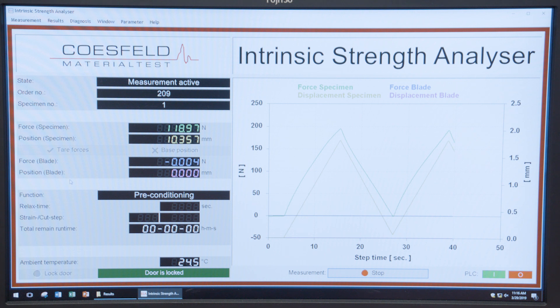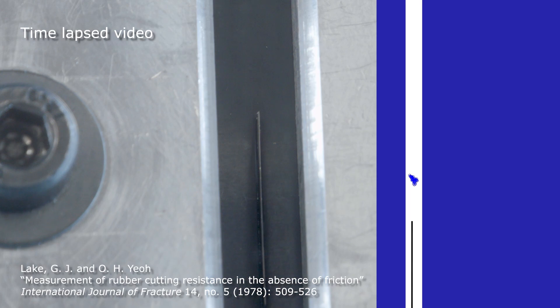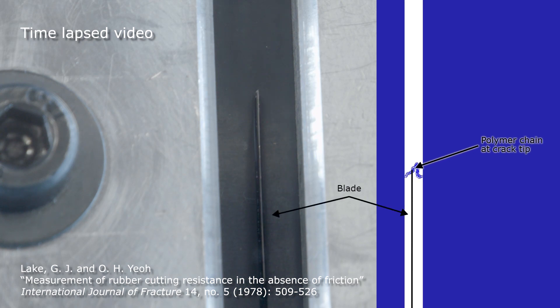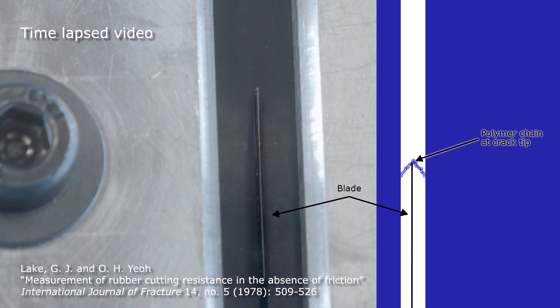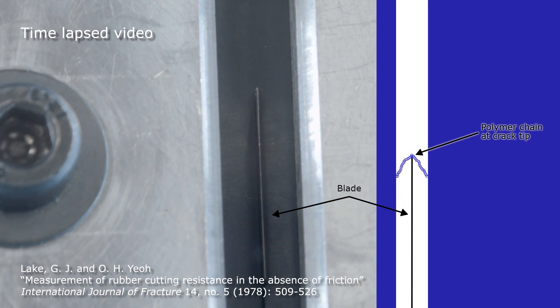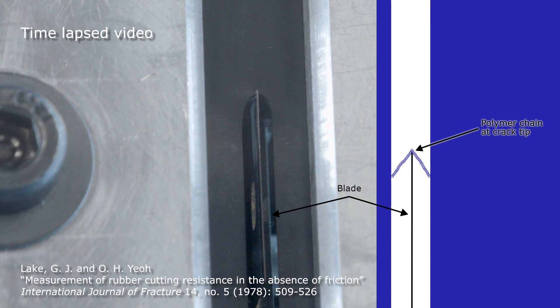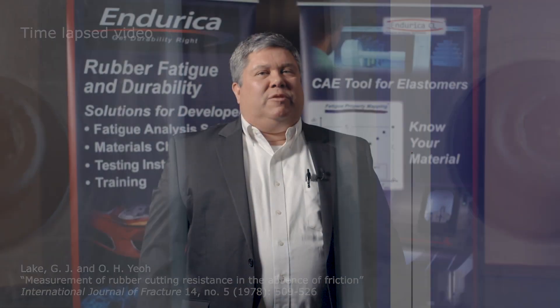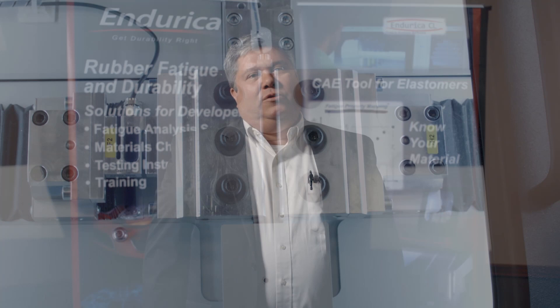The intrinsic strength analyzer uses the Lake and Yeo cutting method. The core idea of this method is that a sufficiently sharp blade can directly load and break molecular bonds without inducing the large viscoelastic process zone and losses that arise when you drive a crack by applying ultimate loads or dynamic loads.